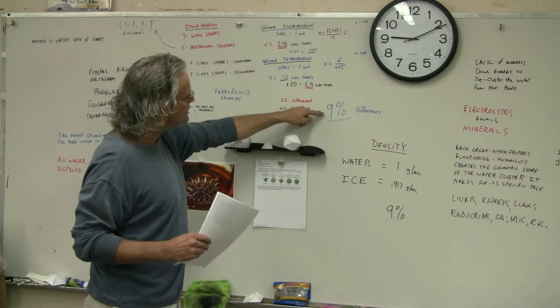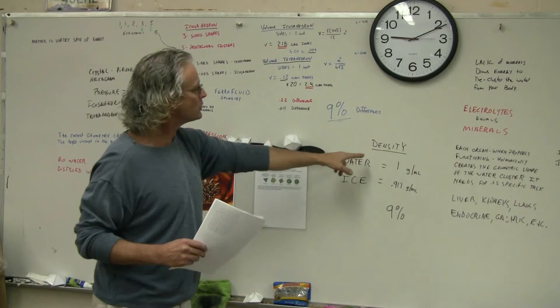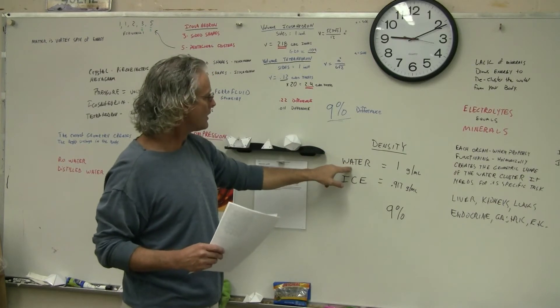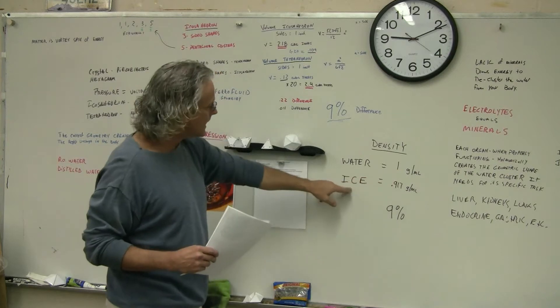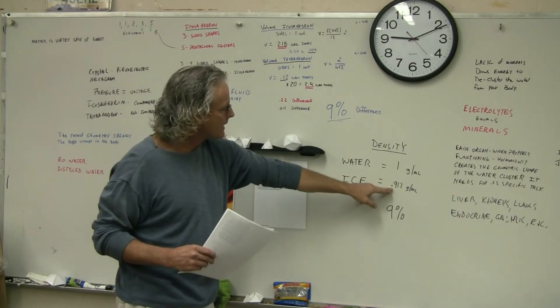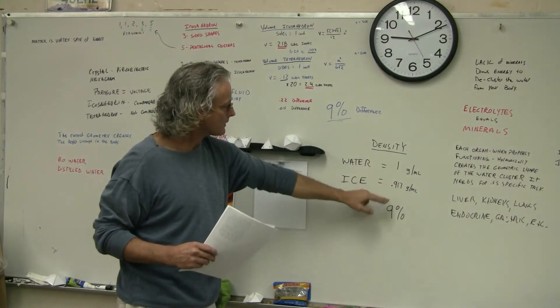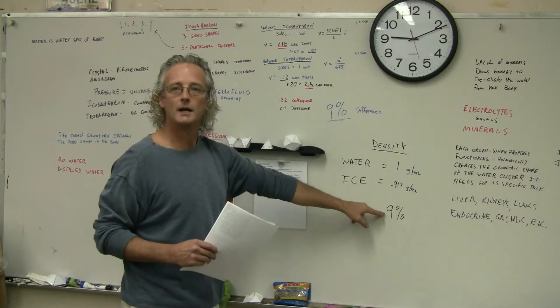What's interesting is if you look at the density of water, for example, fresh water is 1 gram per milliliter. Ice, however, is 0.917 grams per milliliter. That is an approximate 9% difference.